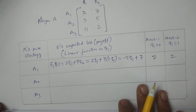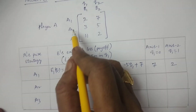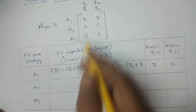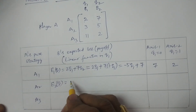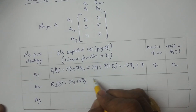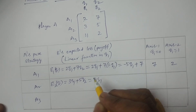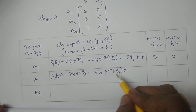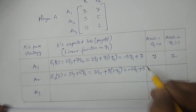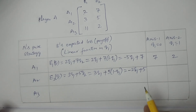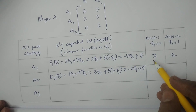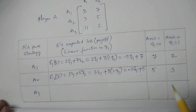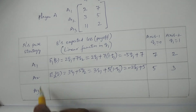Now consider strategy A2 of player A. B's expected loss E2(q) equals 3q1 plus 5q2. Converting in terms of q1: 3q1 plus 5(1 minus q1) equals 3q1 minus 5q1 plus 5, giving minus 2q1 plus 5. This is the linear function in q1. Substituting q1 equals 0 gives 5; substituting q1 equals 1 gives 3 minus 2 equals 3. So the points are 5 and 3.